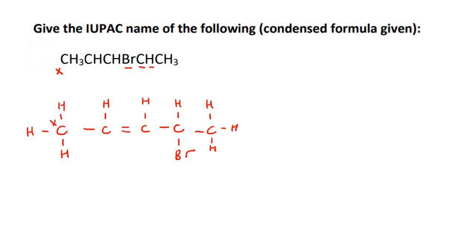So we're going to label it from the left. The reason is that the functional group is this double bond. So we're going to label it from the side that gives the functional group its lowest number.